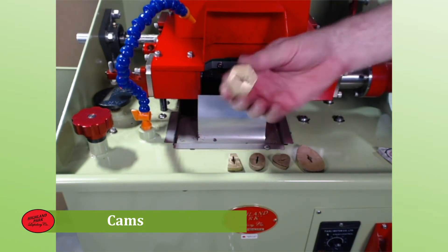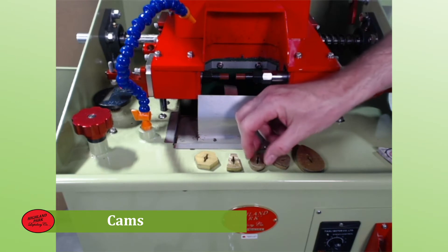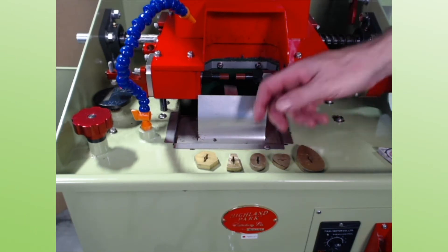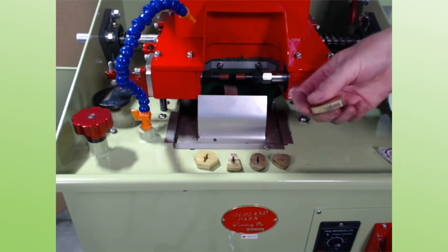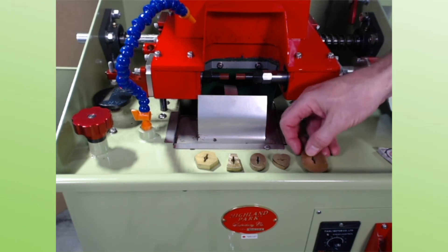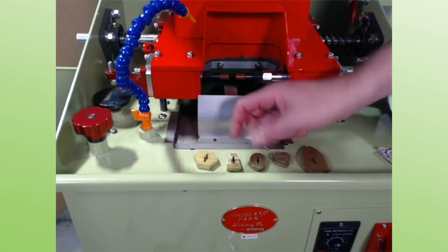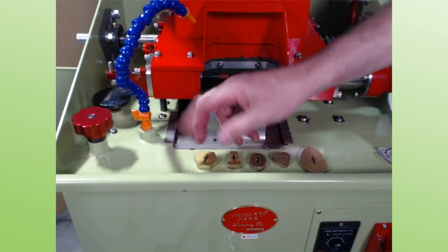So these are cams. They're made out of brass and they're different shapes. You can see we've got a whole bunch of them. I have no idea how many cams we've got, but teardrops, hearts, ovals, shield shapes, things like that.